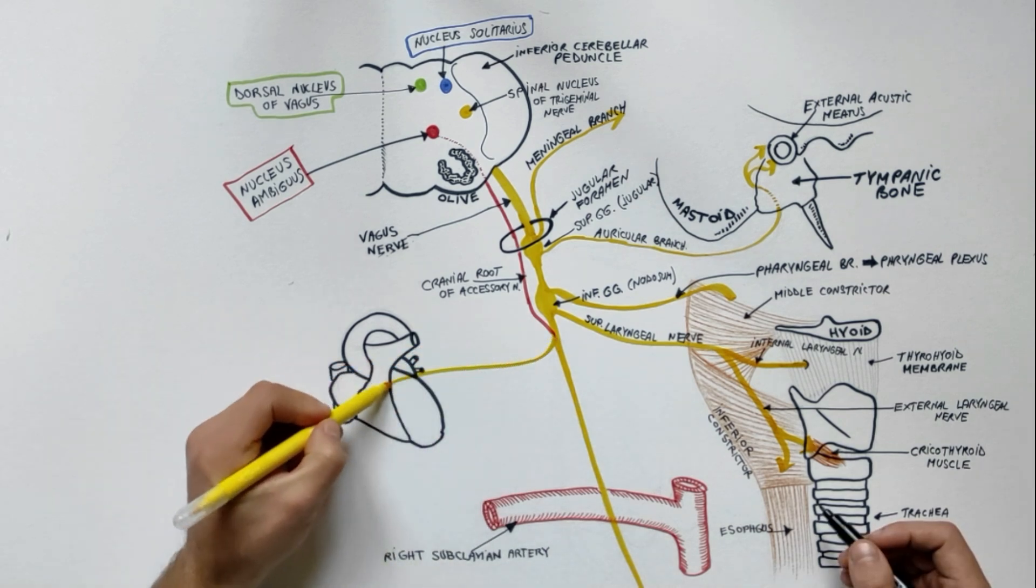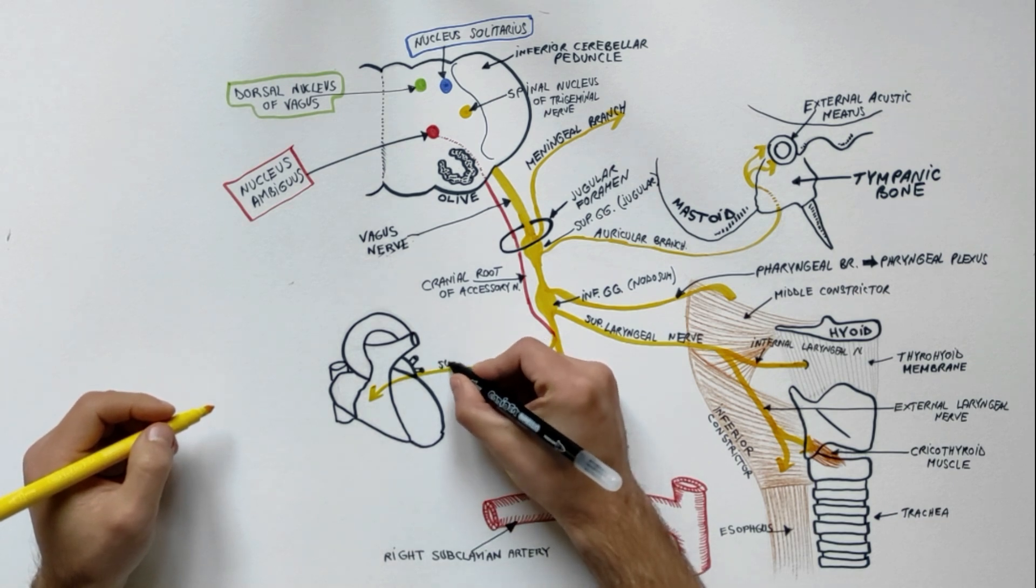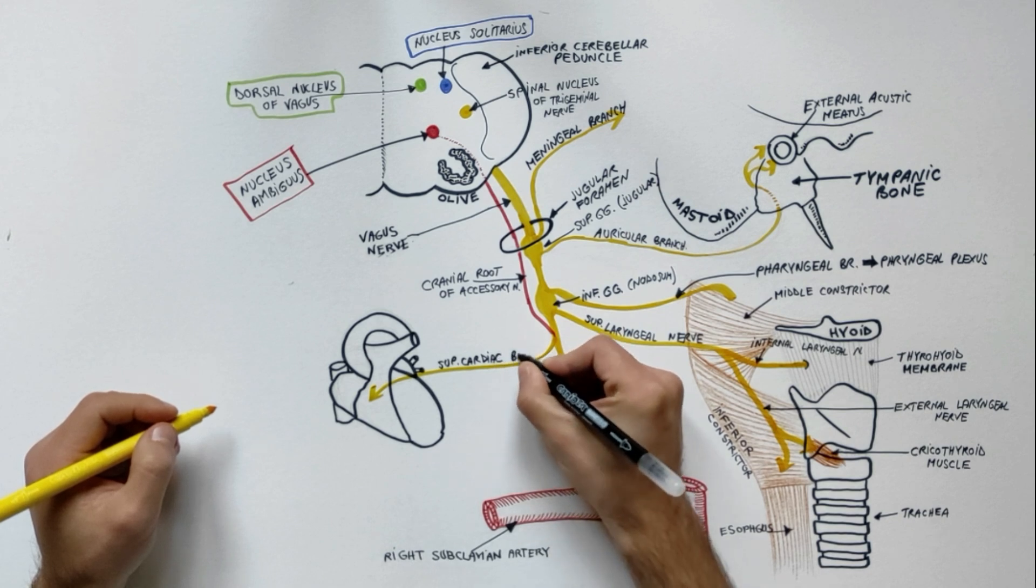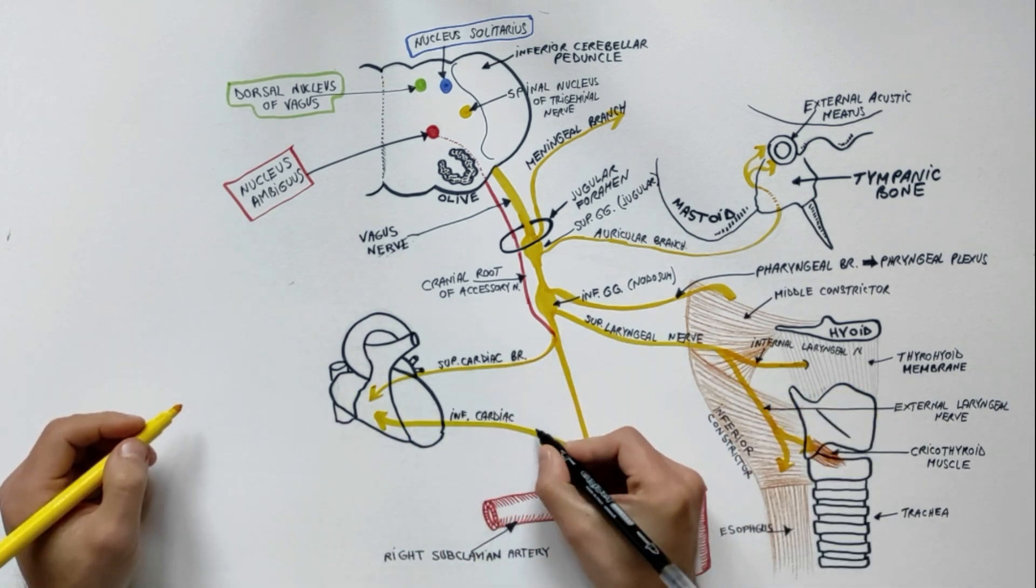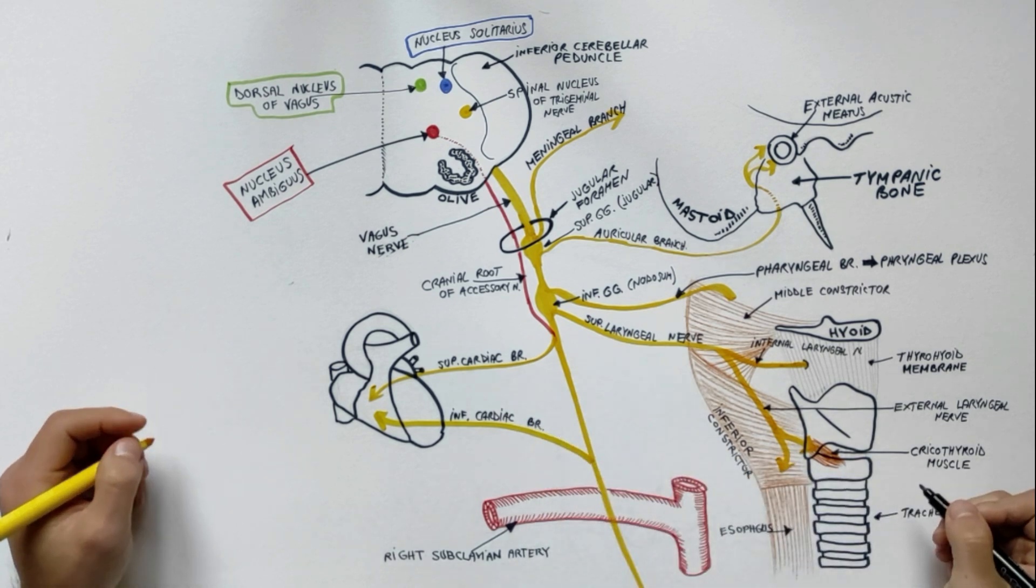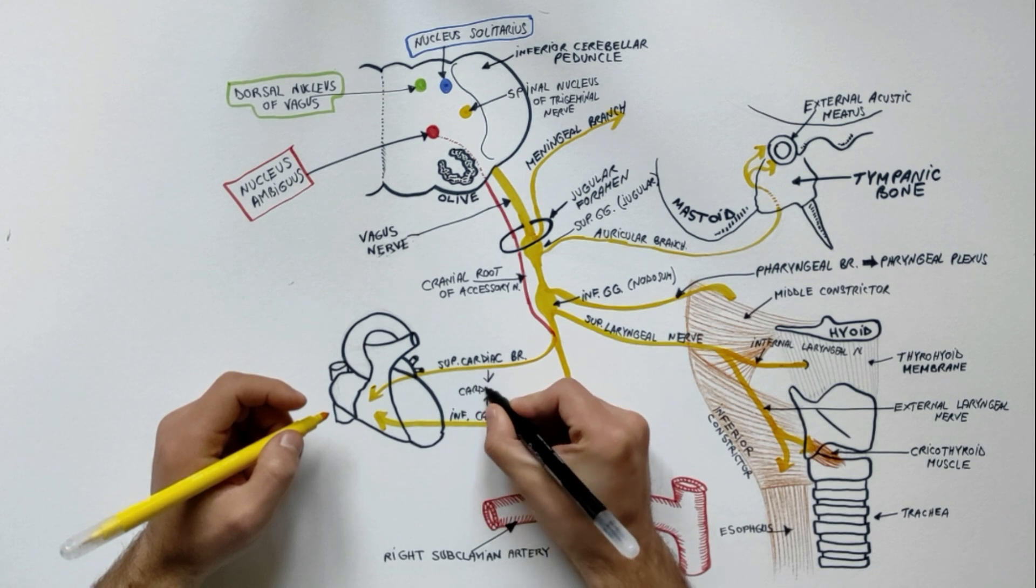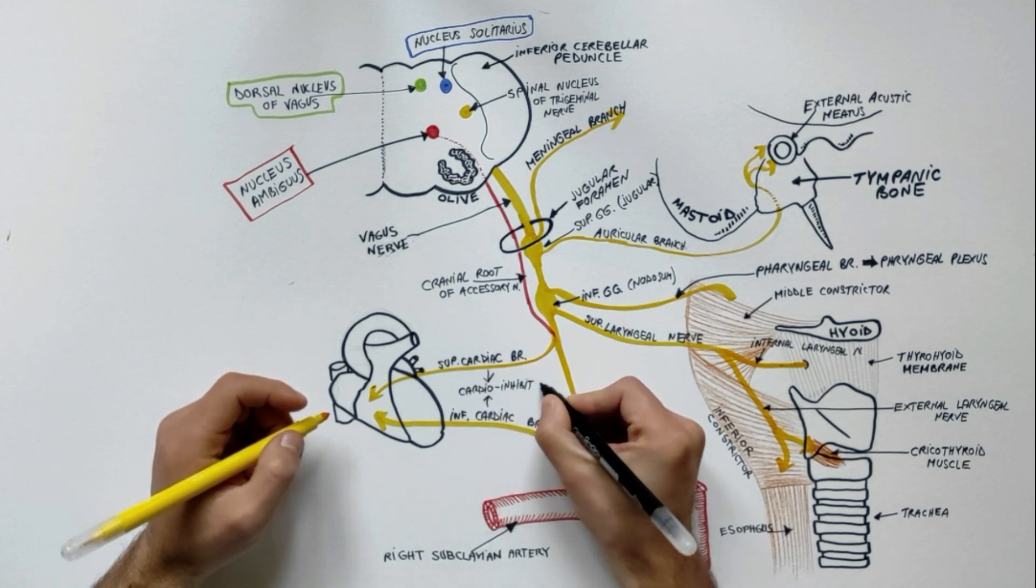We have two cervical cardiac branches from the vagus nerve. The superior cardiac branch arises in the upper part of the neck and the inferior cardiac branch arises in the lower part of the neck. They enter the thorax through the thoracic inlet and carry preganglionic parasympathetic cardio-inhibitory fibers to the heart.